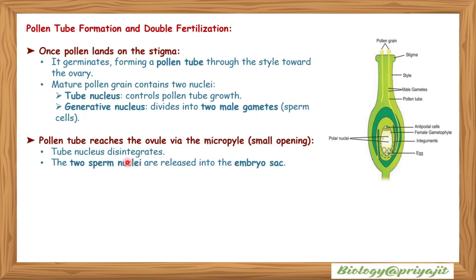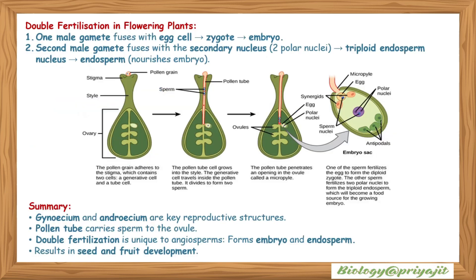The tube nucleus disintegrates and the two sperm nuclei are released into the embryo sac. Double fertilization in flowering plants: one male gamete fuses with the egg cell to form the zygote, which develops into the embryo. The second male gamete fuses with the secondary nucleus — the two polar nuclei — to form the triploid endosperm nucleus. The endosperm nourishes the embryo. Double fertilization is unique to angiosperms.